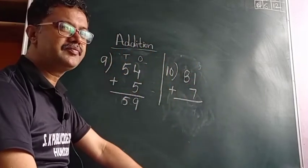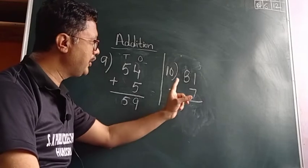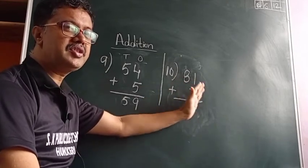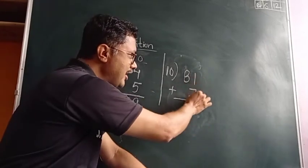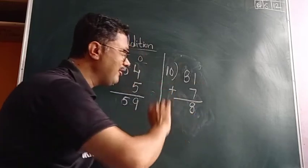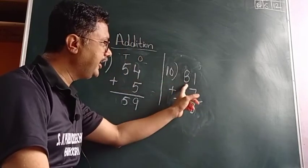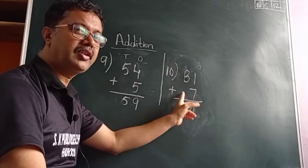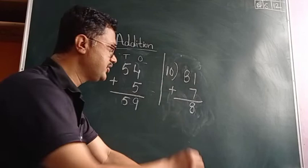Same procedure here: one plus seven is equal to eight. And in the tens place, nothing is there — consider it as zero — eight plus zero is equal to eight.